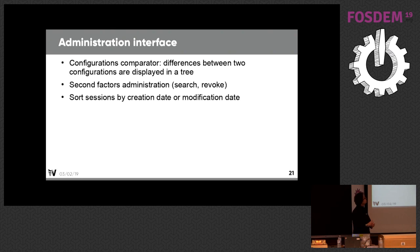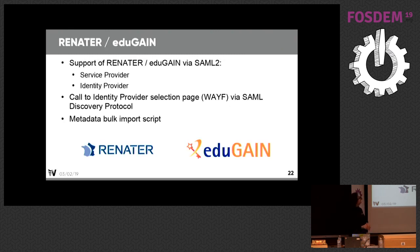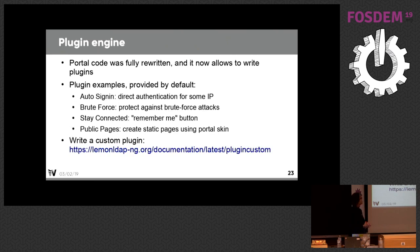We did some modifications to the manager, the administration interface. You can now compare two configurations when you modify one. In LemonLDAPNG, since the beginning, when you edit the configuration we generate a new configuration with a new number. Now you can see with the graphical interface what the differences are. We added second factor management, so you can delete a second factor for a user. If you know RENATER or EduGAIN organizations, we are now fully compatible with them, so you can do identity federation with LemonLDAPNG. And we have a plugin engine, so you can write any new feature with a simple plugin inside LemonLDAPNG. We already have some plugins in the core product, but you can write your own.